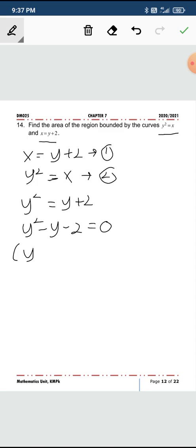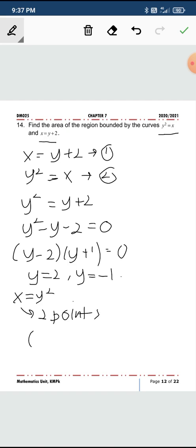And then factorize. You get two points. Y equals 2 and y equals negative 1. You can substitute in this, x equals to y-squared. Then you have two points, which will be 4, 2 and 1, negative 1. So these are your intersection points.